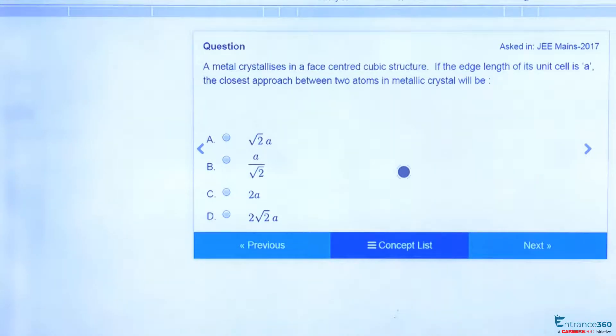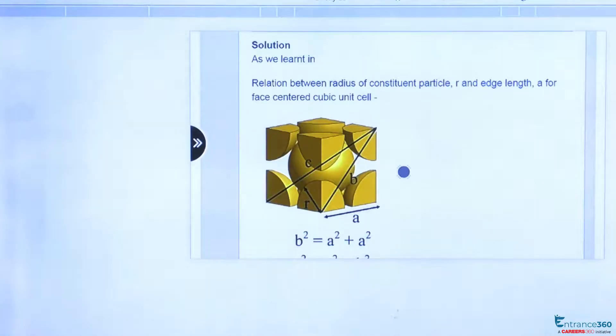Let's find out what is the concept behind this question. In this concept, we will use the relation between edge length and the radius of the atom. As we can see, this is the FCC structure, so we will find the relation between edge length and radius.